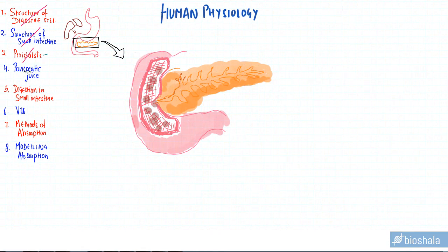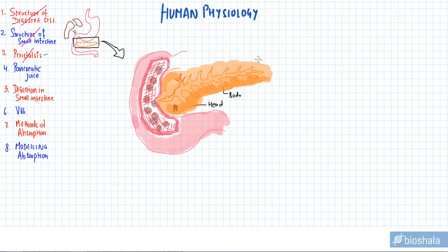This next topic is pancreatic juice. As you can see, this is our stomach, and just beneath the stomach we have this organ known as the pancreas. As far as the structure is concerned, we can divide it into head, body, and tail. This is its structure, and it opens into the duodenum.